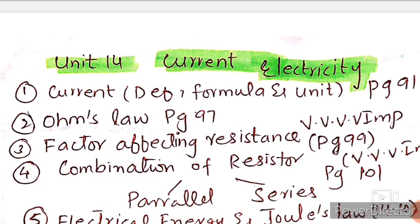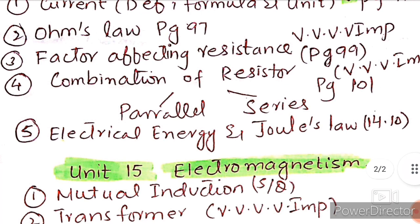In Federal Board exams, combination of resistor, parallel and series, is very important for MCQs, short questions, and numericals on page number 101. Last topic is electrical energy and Joule's law, topic 14.10.